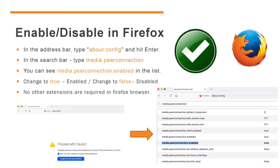Go to the address bar of the Firefox browser, type about:config, and press Enter. You will see a security confirmation dialog — accept it. After that, a list of features will appear on the config page. Using the search bar, type media.peerconnection. You will see media.peerconnection.enabled in the list. If you want to disable it, set the boolean value to false. I have attached a reference image for your understanding.